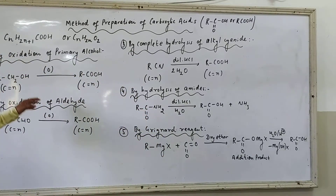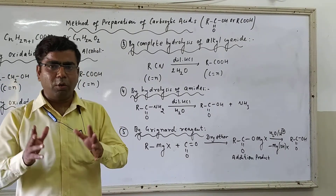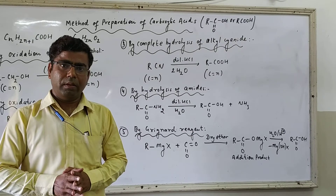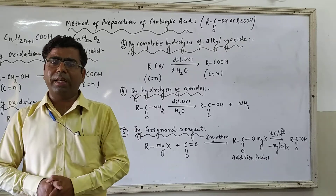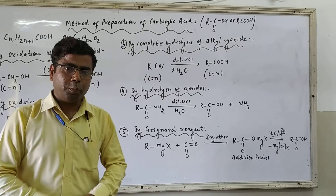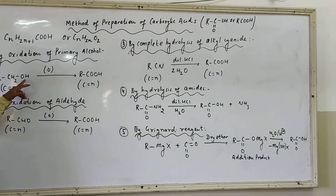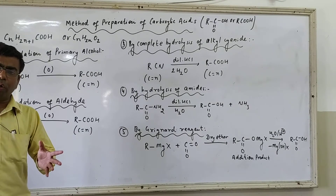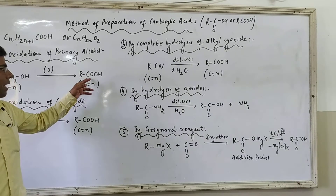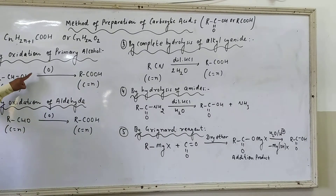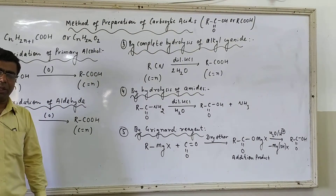Now let us move to the methods of preparation. The first method is by the oxidation of primary alcohols. Primary alcohols undergo oxidation and form aldehyde first. Aldehydes are highly susceptible towards oxidation, so we cannot stop the reaction at the aldehyde stage; aldehyde undergoes further oxidation and as a result we get carboxylic acid. Primary alcohols have the general representation RCH₂OH, and in the presence of oxidizing agents like acidic KMnO₄, acidic K₂Cr₂O₇, alkaline KMnO₄, or alkaline K₂Cr₂O₇, they give RCOOH. So the CH₂OH unit gets converted to the COOH unit on oxidation of primary alcohols.